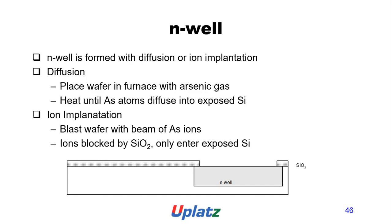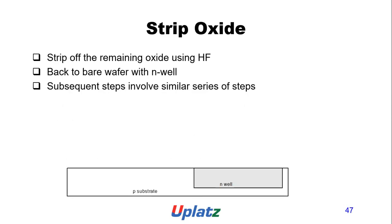N-well formation: the N-well is formed by diffusion or ion implantation. Diffusion places the wafer in a furnace with arsenic gas, heating until arsenic atoms diffuse into the exposed silicon. Ion implantation blasts the wafer with a beam of arsenic ions. Subsequent steps involve similar series of steps.